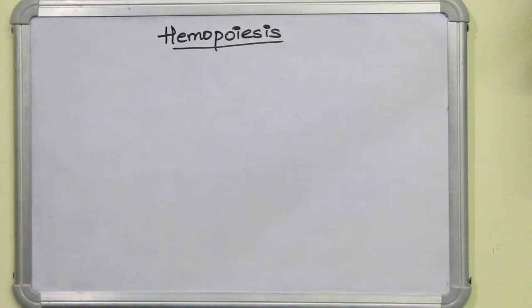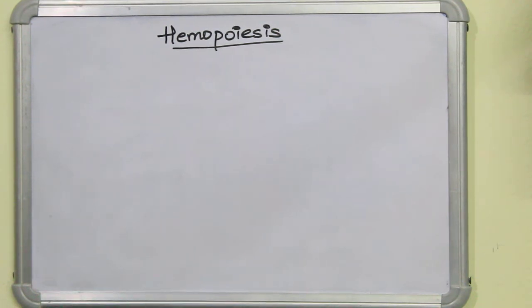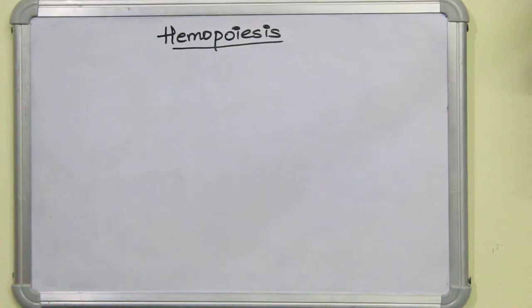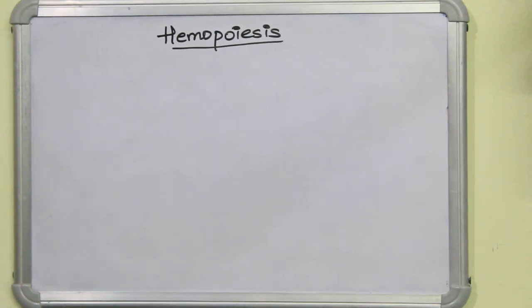Hemopoiesis is the process where formed elements are synthesized. Now what about plasma? Plasma has a lot of proteins. Most of the proteins - albumin, globulin, and fibrinogen - albumin and fibrinogen are mostly synthesized from hepatocytes, that is from liver cells. And what about globulin? The major globulins, that is immunoglobulins, are synthesized from WBCs. So these are coming from cells themselves, and these cells come through the process of hemopoiesis.